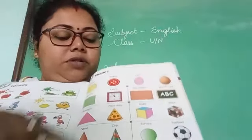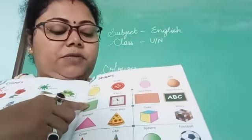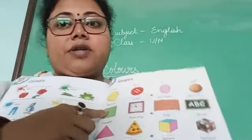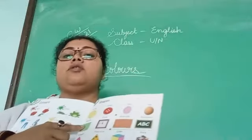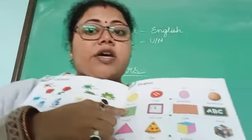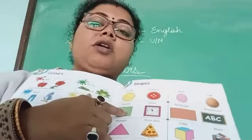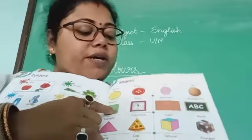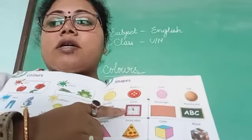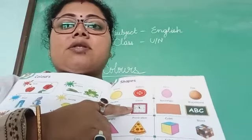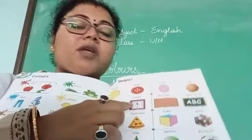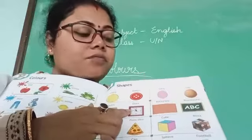Next one — you have read circle and oval, and this one is square. Every side is equal. Square example is given: clock. C-L-O-C-K — clock. Square shape example is clock.